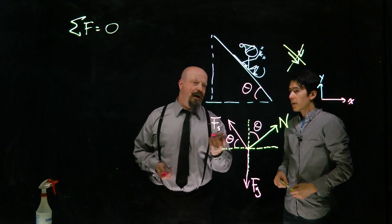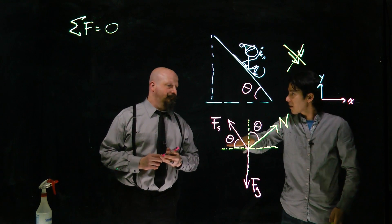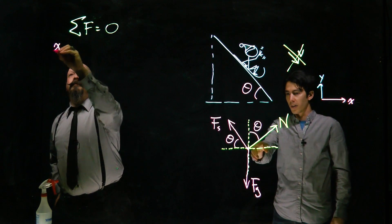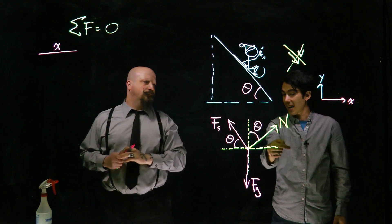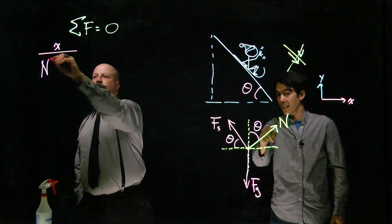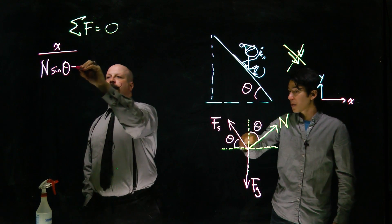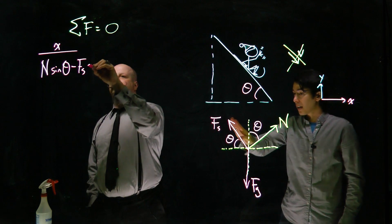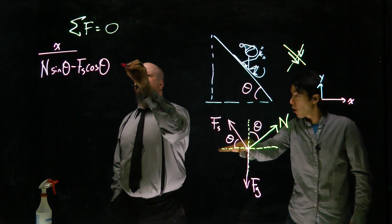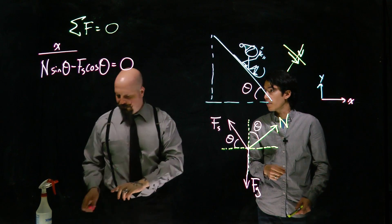All right, well now let's break it into x and y components. Let's look at horizontally first. I'll list things off here. The normal force has a component acting in the positive x direction, and we could get that by N sine theta. The friction force has a component in the negative x direction, opposing it, and that we're going to get as F cos theta. Those two forces will cancel out.